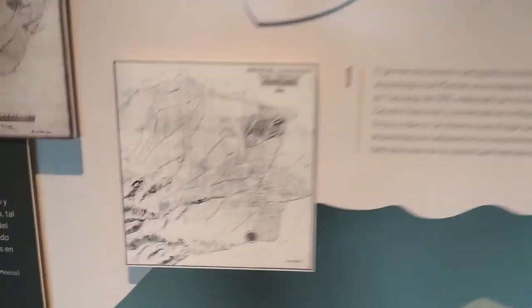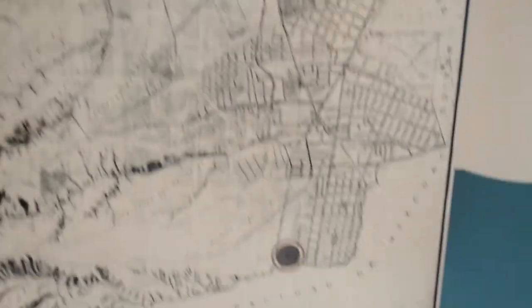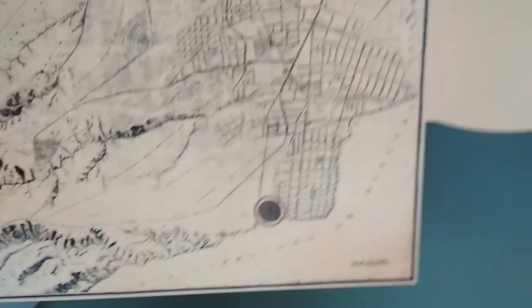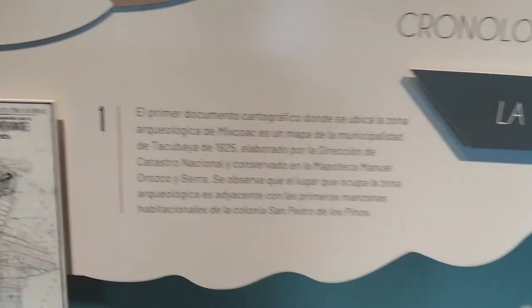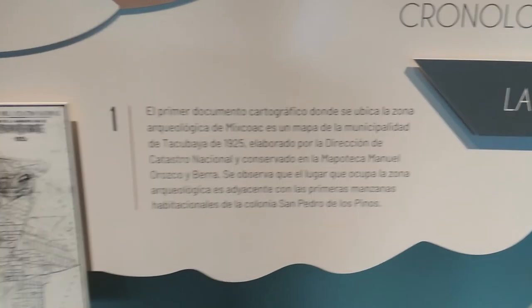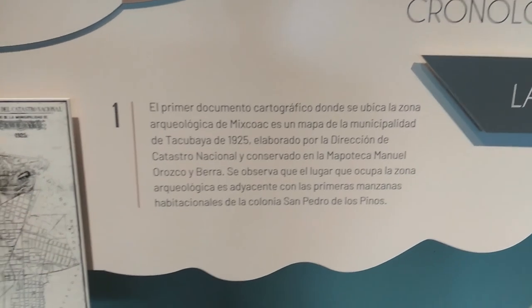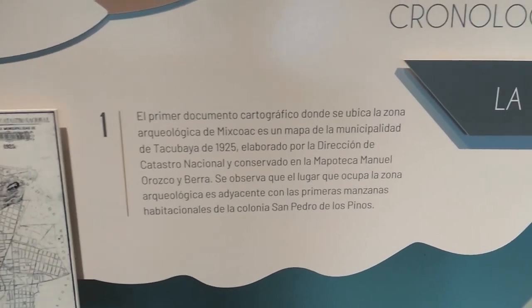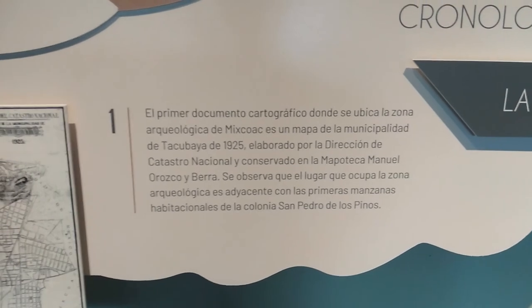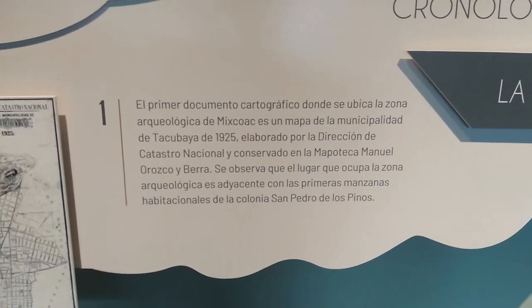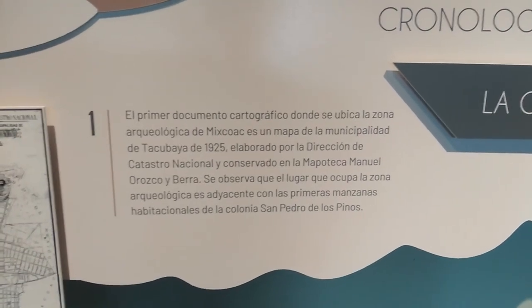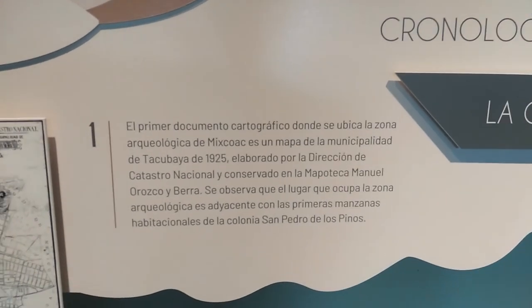Aquí podemos ver rápidamente dónde estamos ubicados ahorita. El primer documento cartográfico donde se ubica la zona arqueológica de Mixcoac es un mapa de la Municipalidad de Tacubaya de 1925, elaborado por la Dirección de Catastro Nacional y conservado en la mapoteca Manuel Orozco y Berra. Se observa que el lugar que ocupa la zona arqueológica es adyacente a las primeras manzanas de San Pedro de los Pinos.